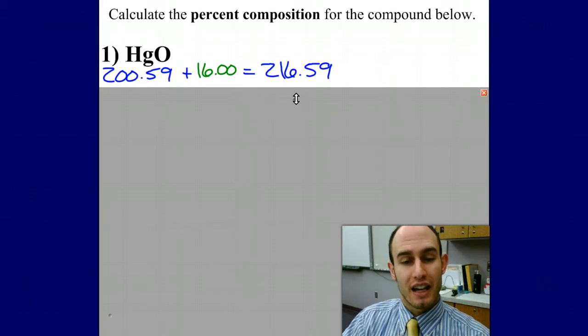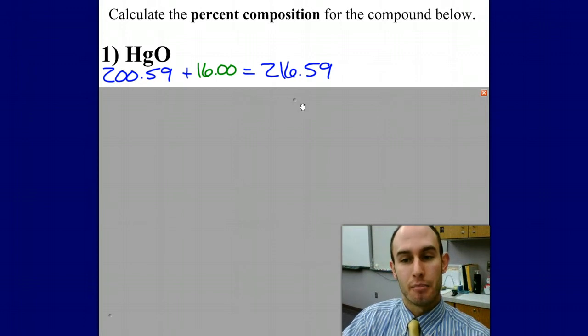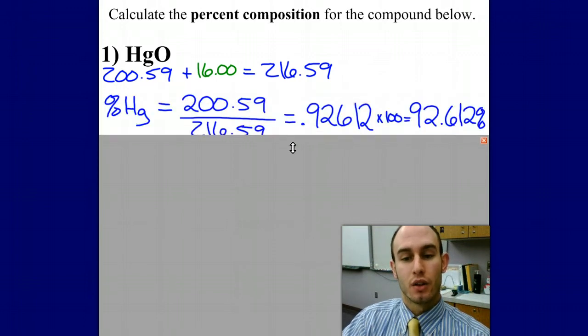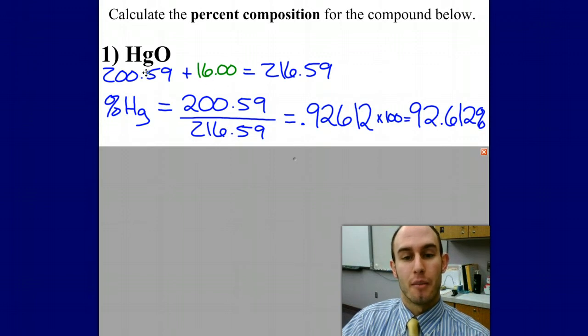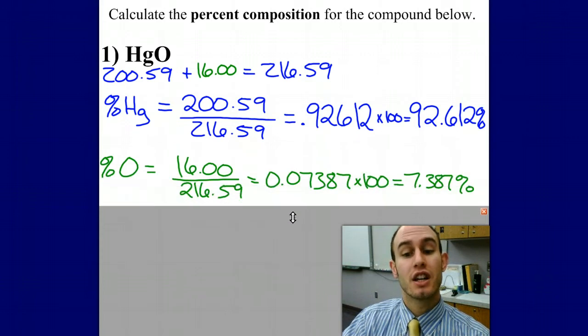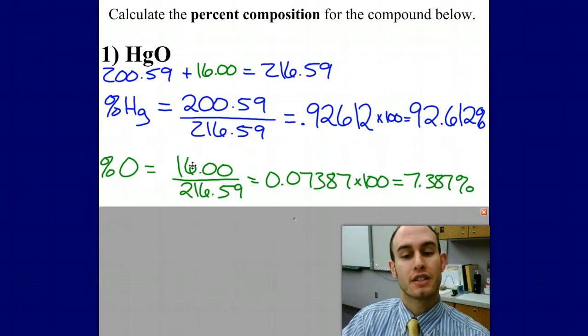To find the percent composition, I'm going to take the mass of mercury divided by the mass of the whole compound. To find the percent of mercury, use the mass of mercury divided by the mass of the whole compound, multiply it by 100. I can do the same thing for oxygen: take the mass of oxygen divided by the mass of the whole compound, multiply it by 100 to get my percentage.